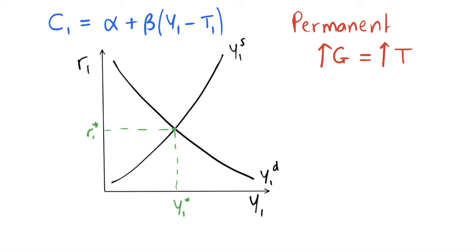In the Keynesian model, to analyze what happens when we change government spending, we need to know that individuals are not forward-looking and we do not have the same micro foundations as in the neoclassical model. Keynes just makes a number of assumptions about how variables behave at the macroeconomic level, so we don't have the same sort of intuition. Instead we just use the Keynesian consumption function for aggregate demand, and our aggregate supply is given by some production function.